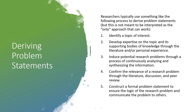Through our reading and experience, we will probably come across ideas that don't seem to align and cause a potential problem — that can be where we locate our problem for research. Confirm the relevance of a research problem through literature, discussion, and peer review. Just because we think something is a problem doesn't mean it hasn't been addressed elsewhere. Once you've decided on your problem, go out and investigate what other people have done. And finally, construct a formal problem statement to ensure the logic of the research problem and communicate the problem to others. The reason we have a problem statement is to formulate your own research process, communicate what problem you're interested in, why it's interesting, and what you plan to do about it for your audience.